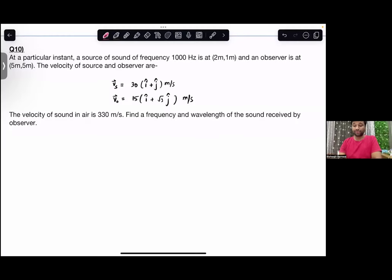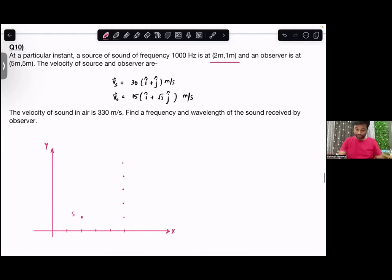At a particular instant, a source of sound of frequency 1000 Hz is at (2,1) and an observer is at (5,5). The locations mark the x-axis and y-axis. So this is the location of source and observer - at five, so three four five one, and two three four five. Here you can connect.